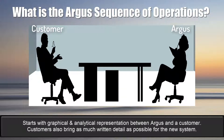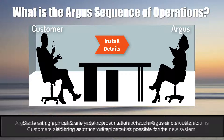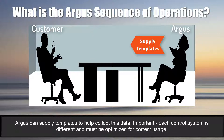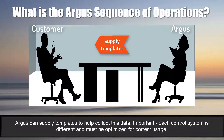It starts with a graphical and analytical representation between Argus AST and a customer. Customers also bring a written overview with as much detail as possible for their new control systems. Argus can supply templates to help collect this data.